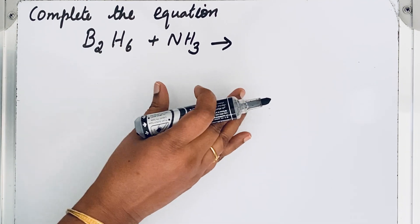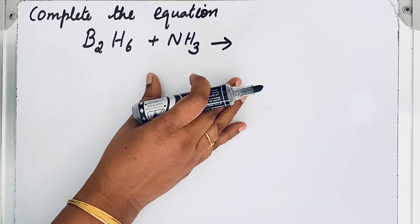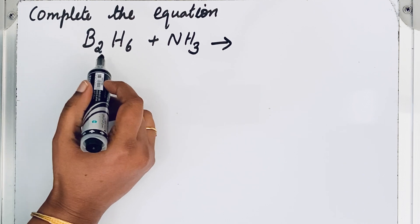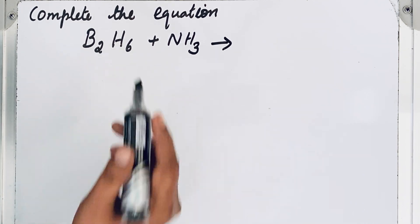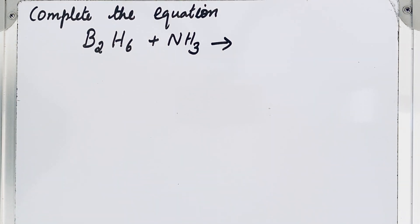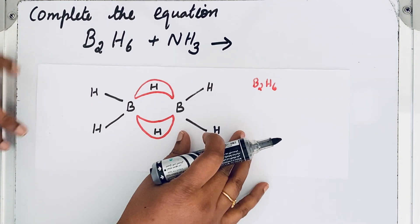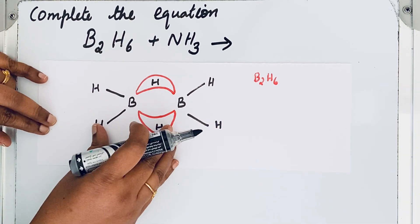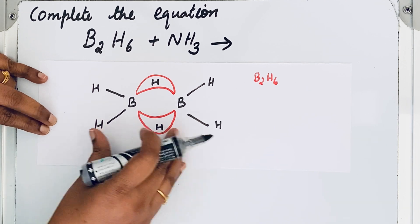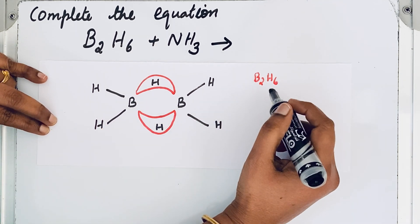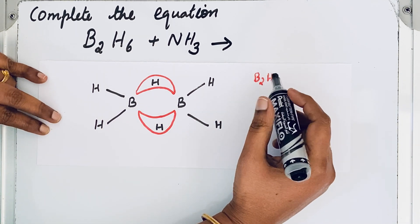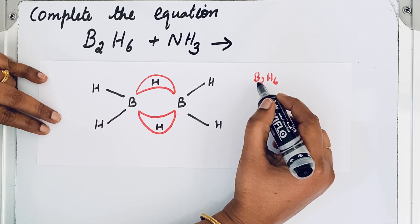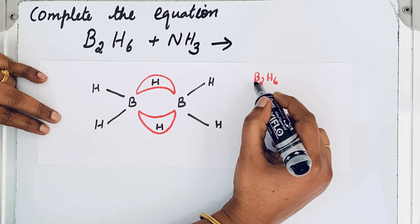Without memorization, let us see how to find the product of this reaction. To understand this reaction, you first need to know the structure of diborane. Let us write the valence electrons in B₂H₆. Boron has three valence electrons, and there are two boron atoms, so two times three gives six.